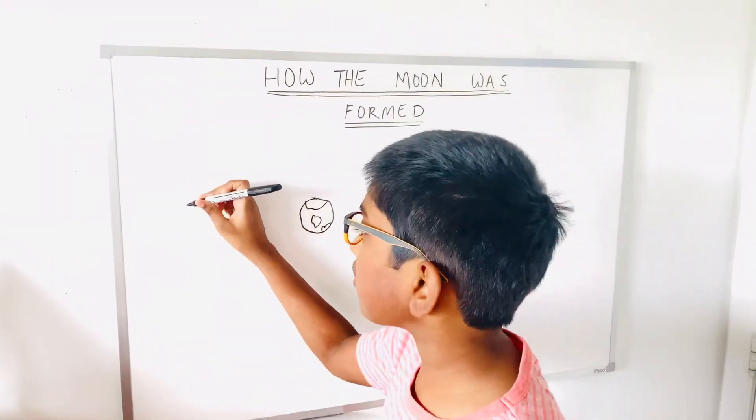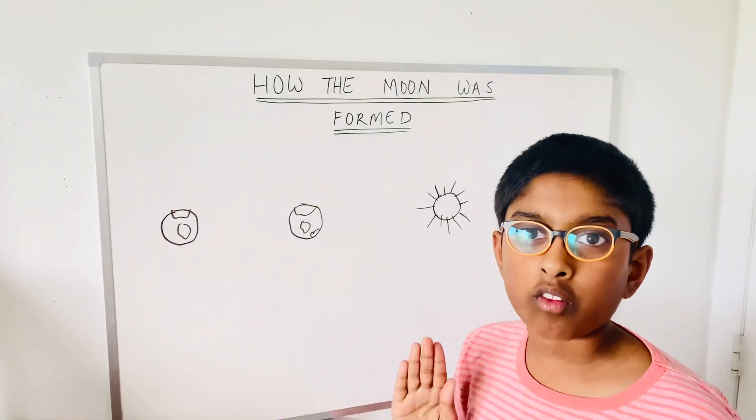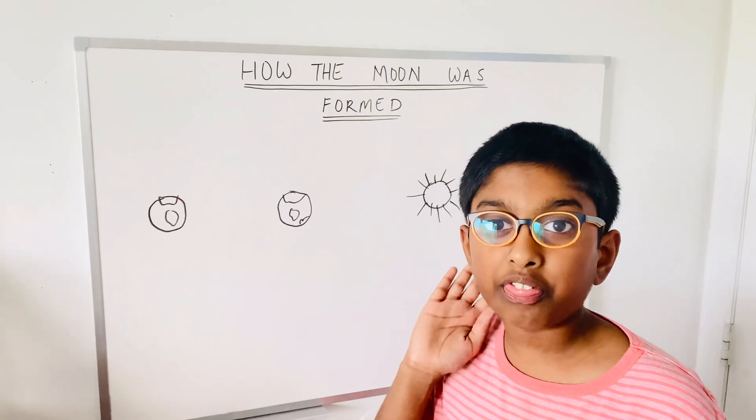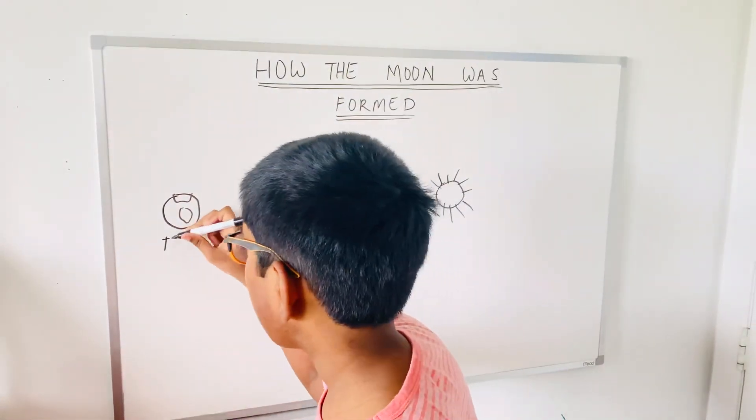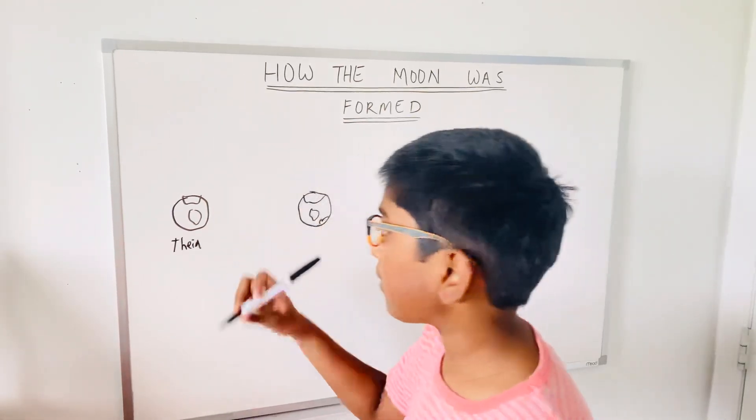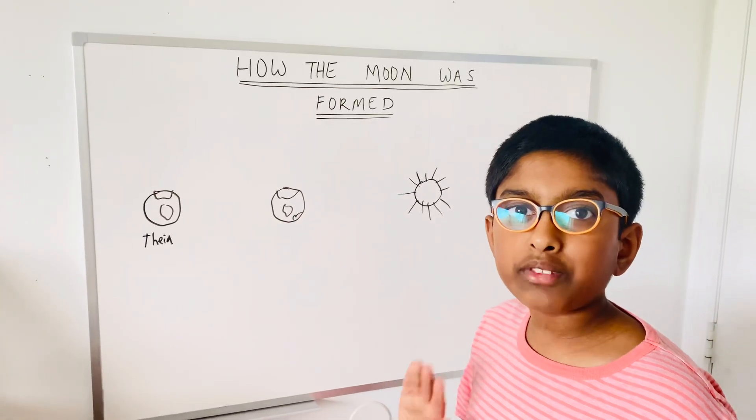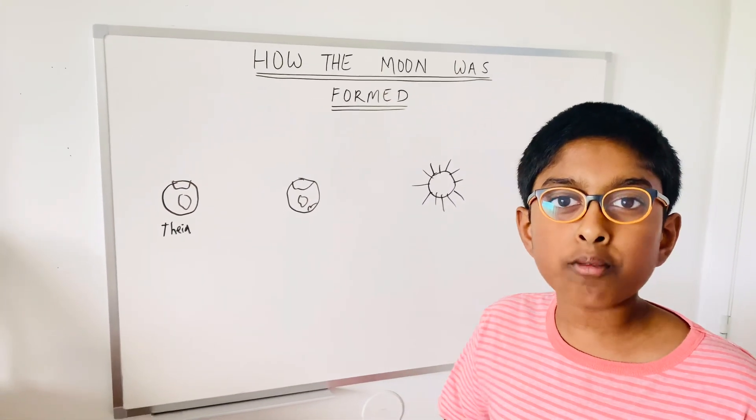There was this planet happily orbiting the sun. It was like the Earth. But it was a planet. And it was called Theia. I'll write that down right here to this planet. Theia. The planet was called Theia, okay? But then, something that nobody knows changed Theia's orbit.